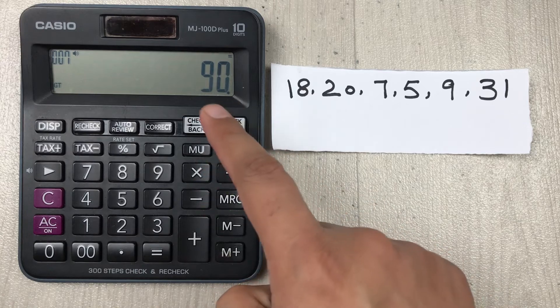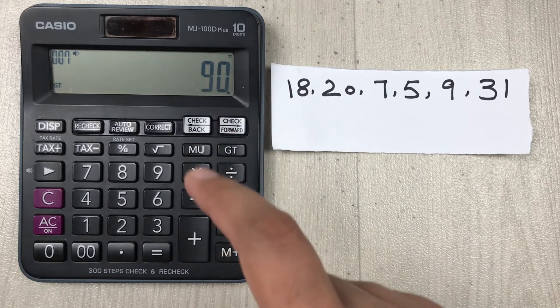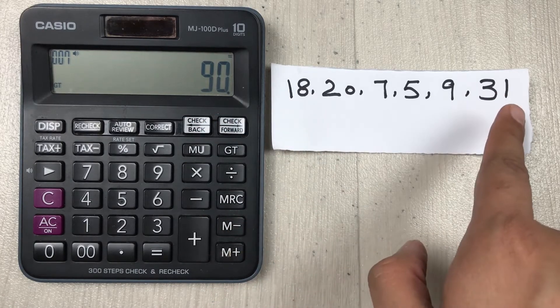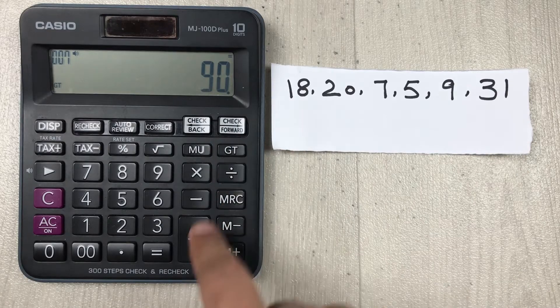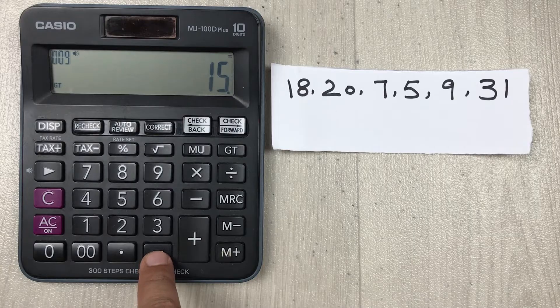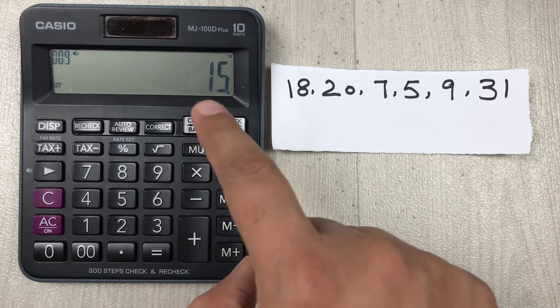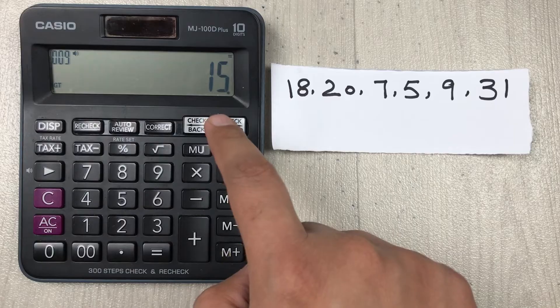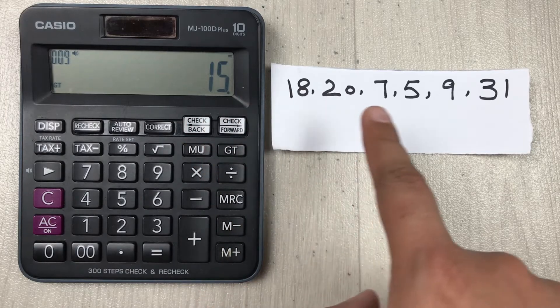We divide this 90 by 6 because the total count of these numbers is 6. So 90 divided by 6, and then we press the equal button. Here is our final answer: 15 is the average of these numbers.